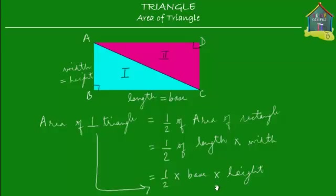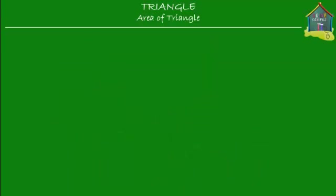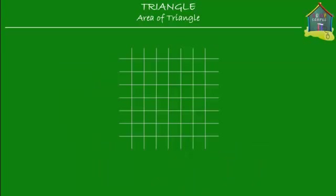But what about any other triangle? What if it's not a right angle triangle? If it's any other triangle — say a regular triangle — what about its area? You'll learn that the area of any triangle is half of its base times its height. I'll show you how that is true. I'm going to take a grid and make a triangle inside this grid.